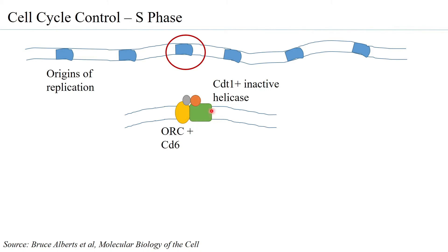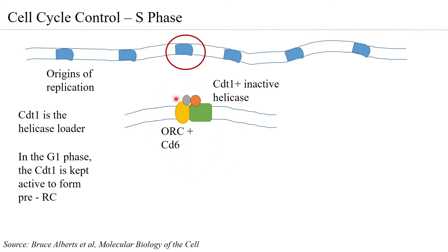CDT1 binds along with the inactive helicase — in fact the helicase is present as a dimer, so there are two helicases. CDT1 acts as the helicase loader: when CDT1 is active it has high affinity to bind to the inactive helicase. Once CDT1 binds CDC6, the helicase already bound to CDT1 is positioned at the origin, forming what is called the pre-replication complex.